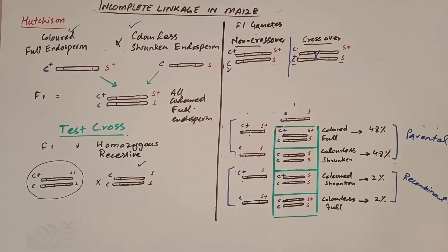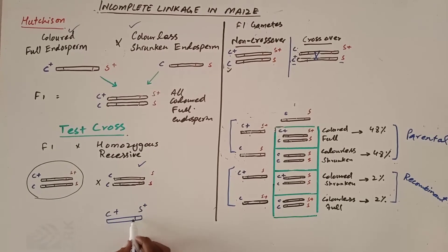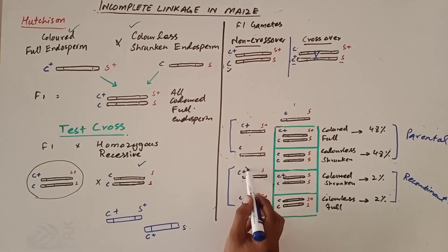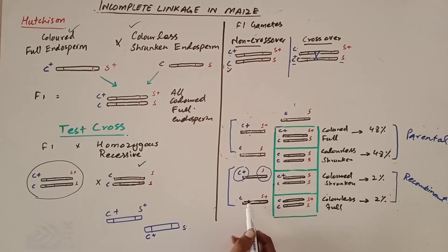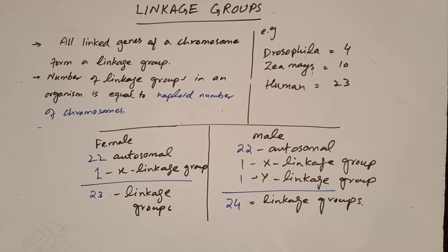This means that without crossing over, the colored gene and full endosperm gene do not separate. But when crossing over occurs, these genes can separate, giving colored endosperm with shrunken endosperm and colorless endosperm with full endosperm. This is the result of incomplete linkage in Zea mays.